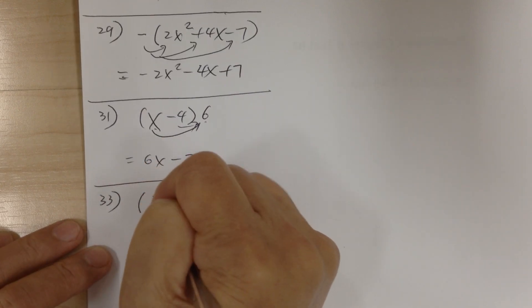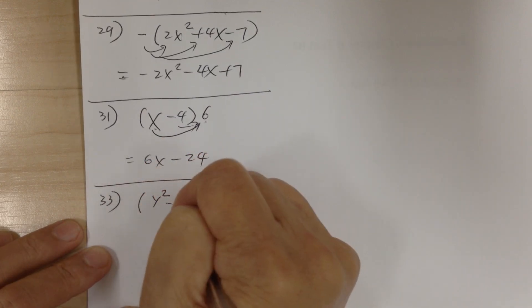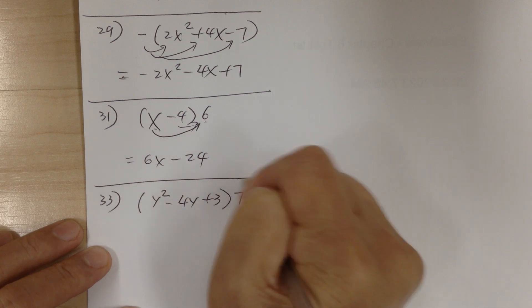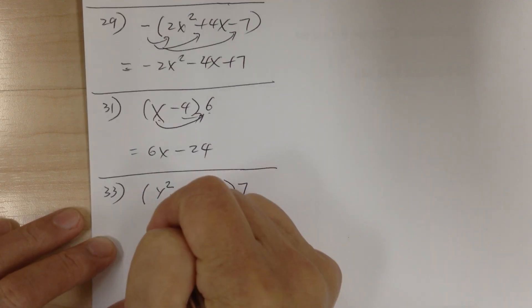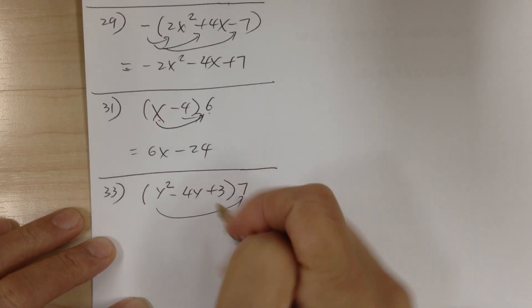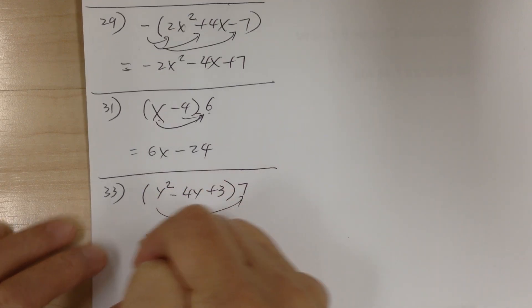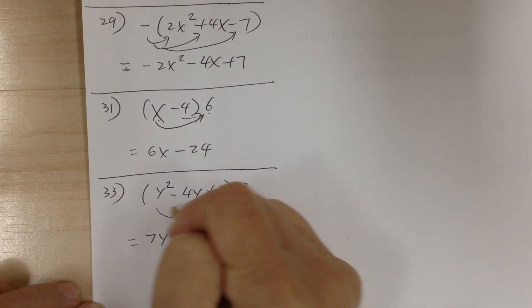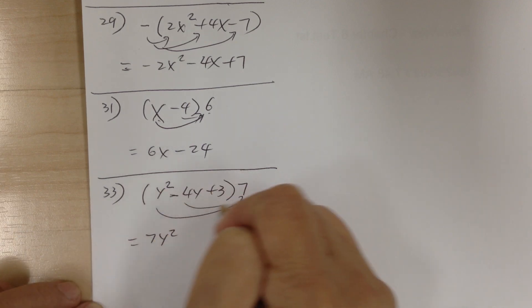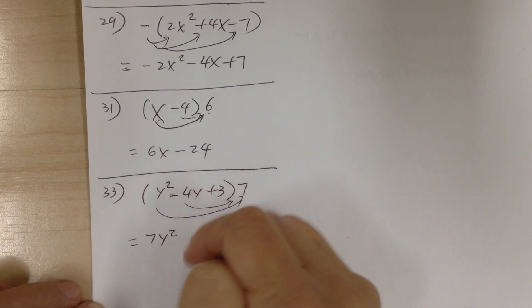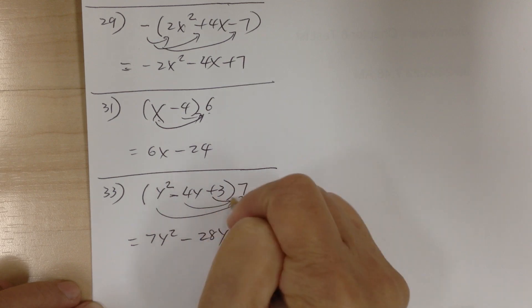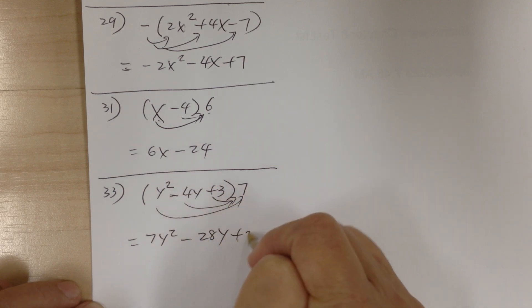Number 33. You have (y squared minus 4y plus 3) times 7. Distribute: 7 times y squared is 7y squared. Go to the next term: 7 times negative 4y is minus 28y. Next term: 7 times 3 is plus 21.